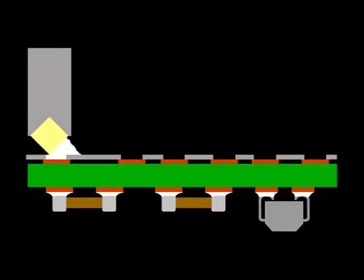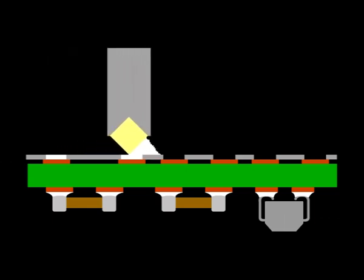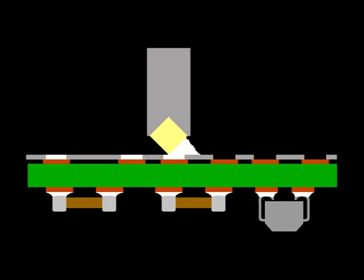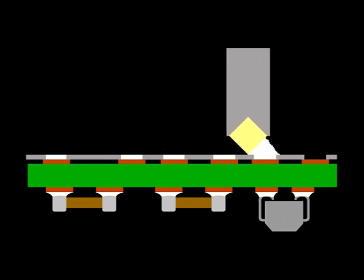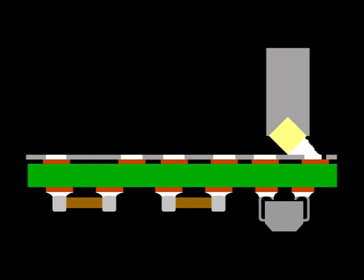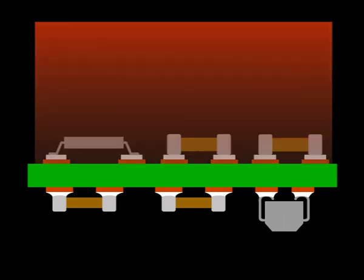Traditional double sided reflow is very common in modern assembly operations. As we have already seen solder paste is printed onto the second side of the board. Components are placed into the solder paste which holds the parts in position. Heat is then applied and the solder paste reflows.